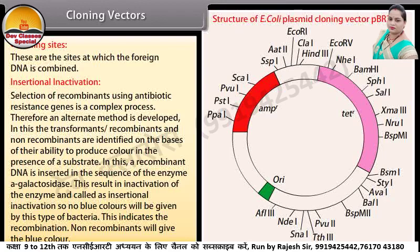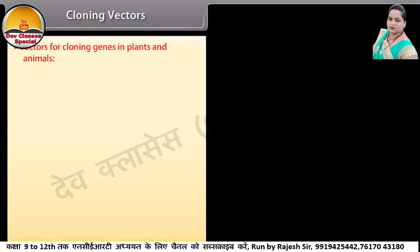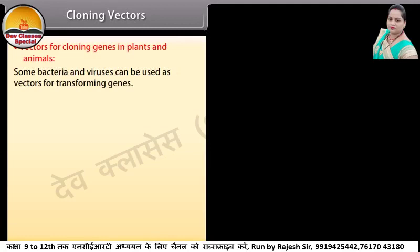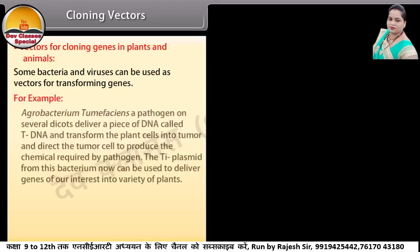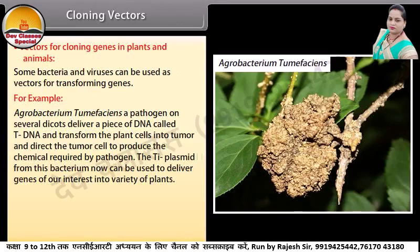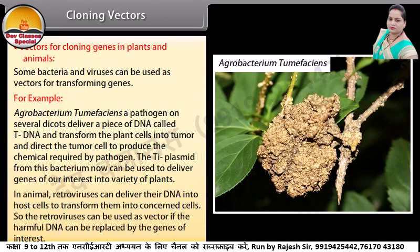Non-recombinants will give the blue color. Vectors for cloning genes in plants and animals: some bacteria and viruses can be used as vectors for transforming genes. For example, Agrobacterium tumefaciens, a pathogen on several dicots, delivers a piece of DNA called T-DNA and transforms the plant cells into tumor, directing the tumor cell to produce chemicals required by the pathogen. The Ti-plasmid from this bacterium can be used to deliver genes of interest into a variety of plants. In animals, retroviruses can deliver their DNA into host cells to transform them, and so retroviruses can be used as vectors if the harmful DNA is replaced by genes of interest.